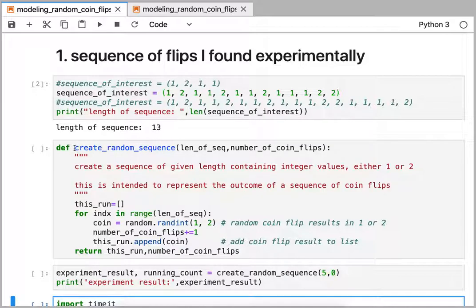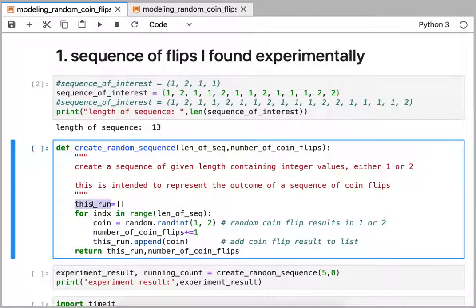Our function creates a list and then we loop over however many elements in the list that we need to create. That's the number of coin flips.